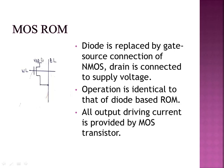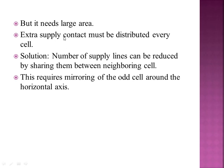In MOS ROM operation, when the wordline is high, the NMOS transistor is enabled. If a transistor is present in the cell, the bitline is pulled down, giving a value of 0. The advantage of MOS ROM is reduced voltage stress compared to diode ROM. However, the disadvantage is that MOS ROM needs a larger area, and each MOS transistor requires a separate supply contact connected to VDD.